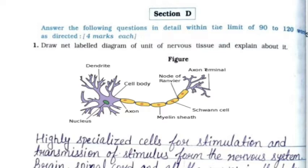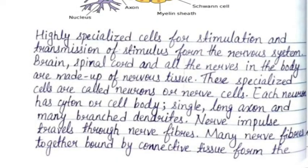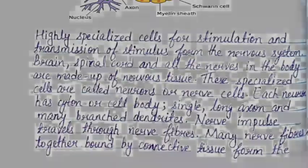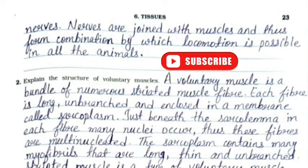Section D, Question 1: Draw and label the diagram of a unit of nervous tissue and explain it. You can see the figure. Highly specialized cells for stimulation and transmission of stimulus form the nervous system. The brain, spinal cord, and all nerves are made up of nervous tissue. These specialized cells are called neurons or nerve cells. Each neuron has a cytone (cell body), a single long axon, and many branched dendrites. Many nerve fibers bound by connective tissue form nerves, which are joined with muscles enabling locomotion.